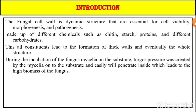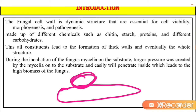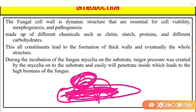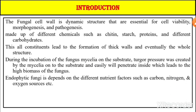During the incubation of the fungus mycelia on the substrate, turgor pressure is created by the mycelia onto the substrate, allowing it to penetrate inside, which leads to high biomass of the fungus. Consider a substrate on which the fungus is growing — the fungi insert their mycelia inside the substrate, creating a net-like structure, and the mycelia grow in bunches, increasing the total biomass.